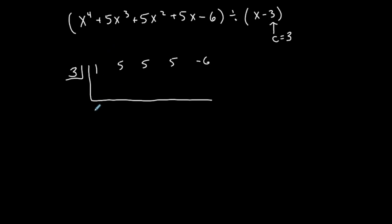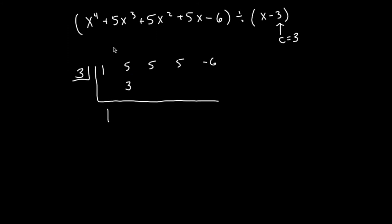First step, bring the first number down below this line. Anything below this line gets multiplied by this. 1 times 3 is 3, that goes onto the next number. Anything vertical gets added. 5 plus 3 is 8. 8, again, anything under this line gets multiplied by this. 8 times 3 is 24. 24 under the next number. Anything vertical gets added. 24 plus 5 is 29.